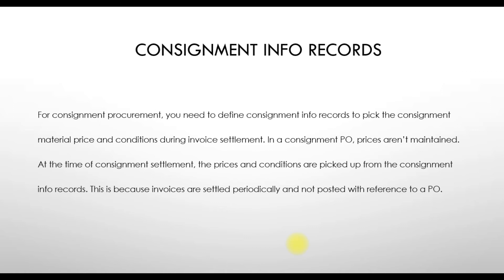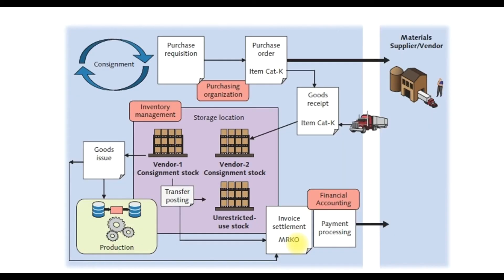Here is the complete process of the consignment procurement cycle in SAP. First, we issue a purchase requisition, which converts into a purchase order — where we select item category K — and the purchase order is issued to the supplier. Then we receive the goods and store them in our storage location. Once we have the goods, we either issue them for production or transfer them to unrestricted use stock. Finally, we do the consignment settlement using transaction code MRKO, after which payment is handled through the financial accounting module.